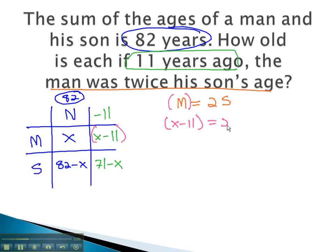Similarly, we get 2 times the son, who in the past was 71 minus x.